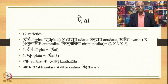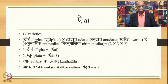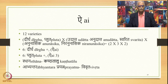The next vowel is Ai. This again has 12 varieties — dirgha and pluta in terms of length, multiplied by 3 accents (udatta, anudatta, swarita), multiplied by anunasika and niranunasika. So 2 multiplied by 3 multiplied by 2 gives 12. There are 6 dirgha varieties of Ai and 6 pluta varieties of Ai. The place of articulation is once again kantha-talu (velum and palate together), and the abhyantara prayatna for Ai is vivruta.